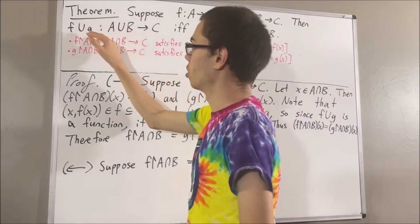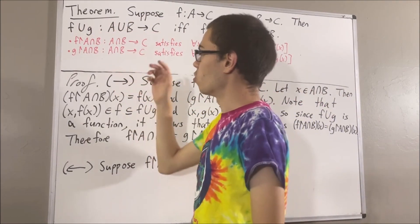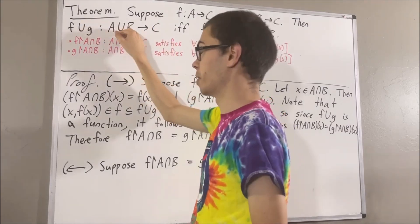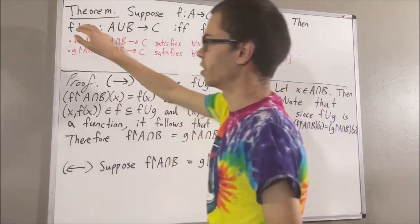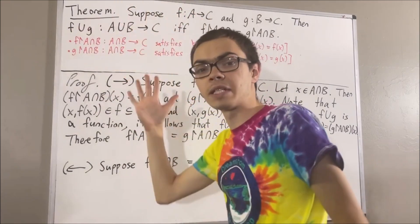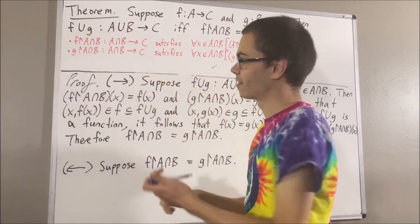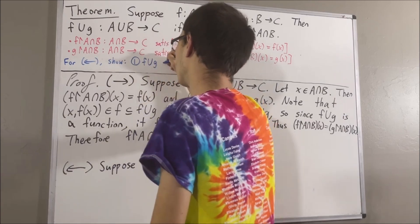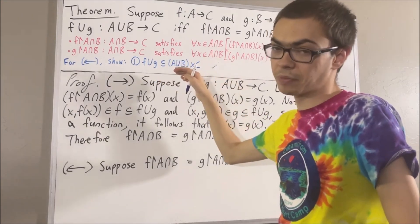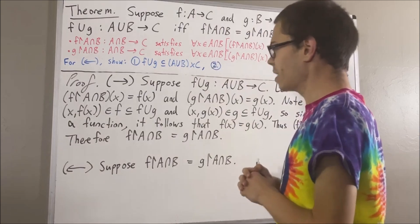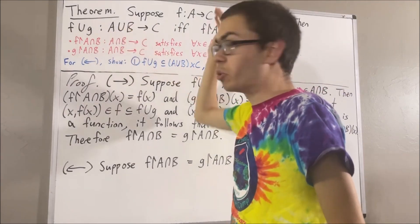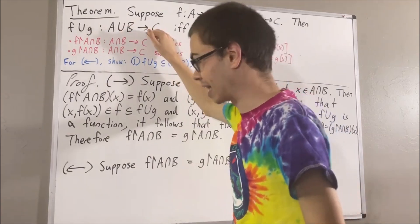To show this, there are two things we need to prove. First, we need to show the union of f and g is a relation from A∪B to C, meaning it is a subset of (A∪B)×C. Then we want to show it is a function from A∪B to C, meaning for all x in A∪B, there exists a unique y in C such that (x, y) is an element of the union of f and g.